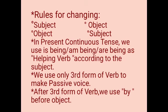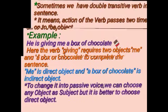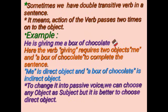We use only the third form of the verb to make passive voice. After the third form of the verb, we use 'by' before the object. Sometimes we have a double transitive verb in a sentence, which means the action of the verb passes two times onto the object.